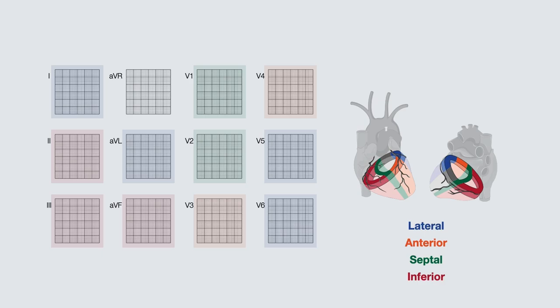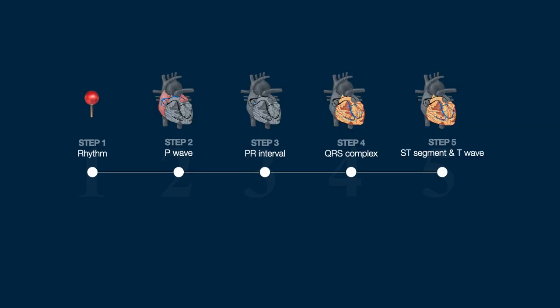At 4-Minute Medicine, we provide a five-step process to ECG interpretation, which is covered in our ECG course. The five-step process starts by analyzing the rhythm, then systematically works through the different waveforms in order, as seen on the ECG trace.